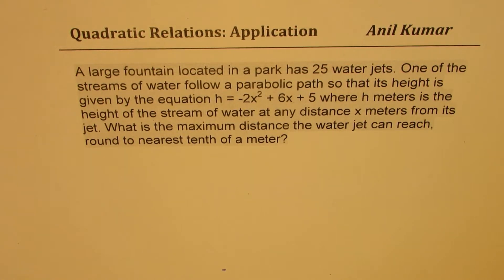equals to minus 2x squared plus 6x plus 5 where h meters is the height of the stream of water at any distance x meters from its jet. What is the maximum distance the water jet can reach round to nearest tenth of a meter?